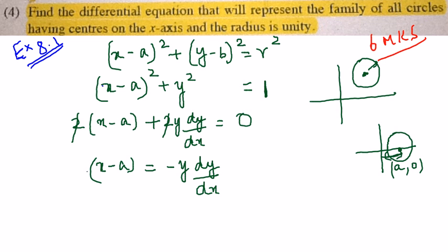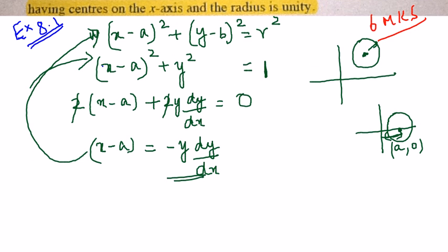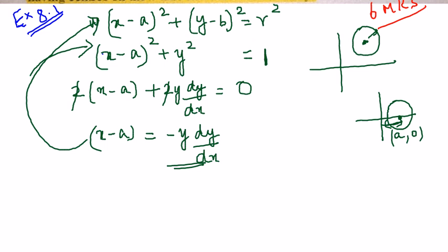Now I will substitute this x minus a. The value for x minus a that I have derived here, I will substitute it in the equation of the circle, not this equation, this equation. Because the center of the circle lies on the x-axis. So the y coordinate is 0. So when I substitute here,